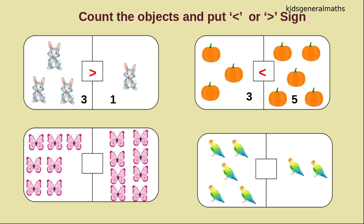Next we are going to count the next object. One, two, three, four, five, six, seven. How many butterflies? Seven butterflies. One, two, three, four, five, six, seven, eight. How many butterflies? Eight butterflies. While comparing these two numbers, which number is greater? Yes, eight is greater. So the crocodile will open the mouth towards eight. So we will say seven is less than eight.